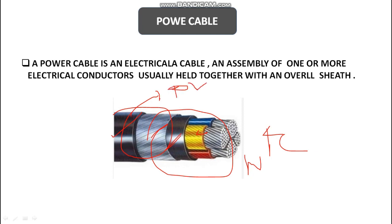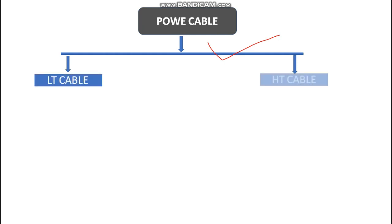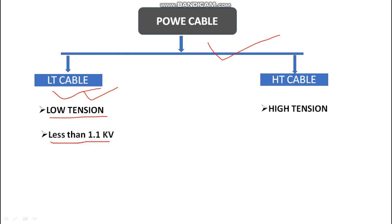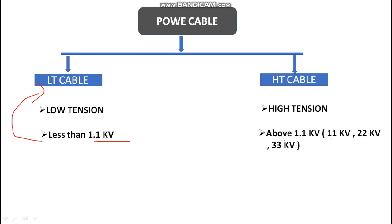Power cable also has types: LT cable and HT cable. LT cable means low tension cable, and HT cable means high tension cable. LT cable generally carries voltage less than 1.1 kV — we use 440 V in three-phase power transfer, and 220 V for single phase. More than 1.1 kV becomes HT cable, so 11 kV line, 22 kV line, and 33 kV line are all HT cables.